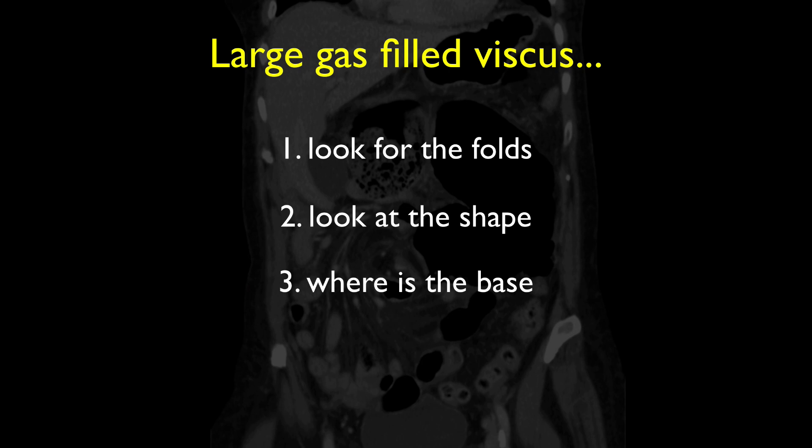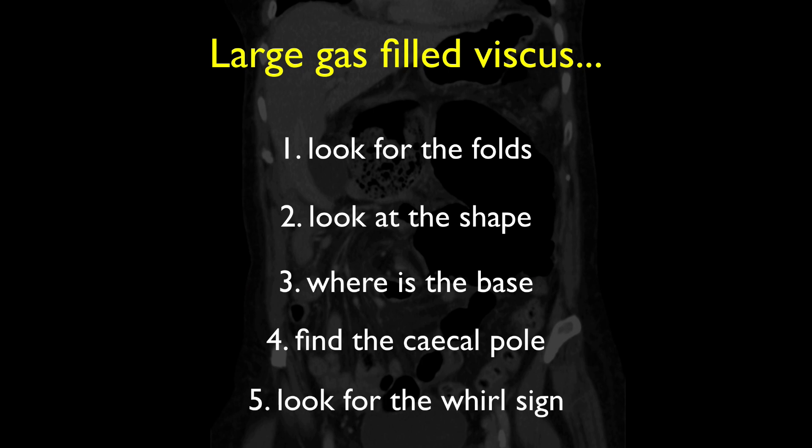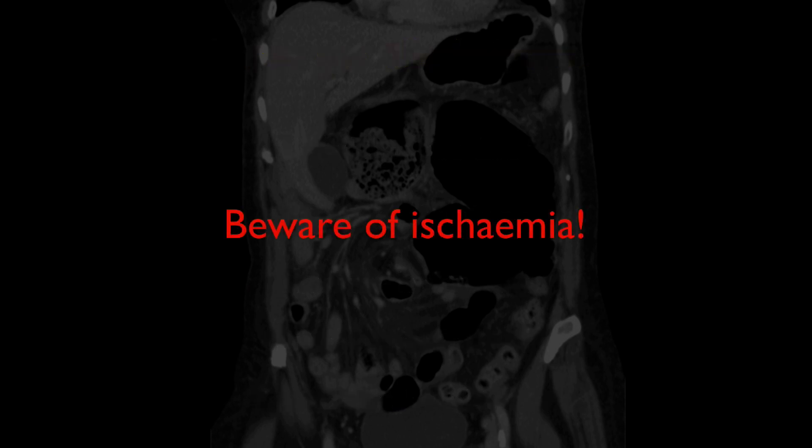On the CT, look for the cecal pole, which will not be in the right iliac fossa in a volvulus. Follow the cecum and look for a twist — known as the Whirl sign — in the bowel, the mesentery and the vessels. A complication of cecal volvulus not seen in this case is ischemia, which may lead to poor enhancement and gas in the cecal wall.